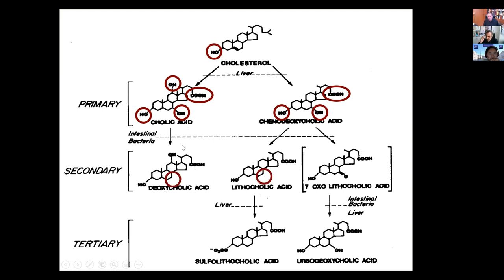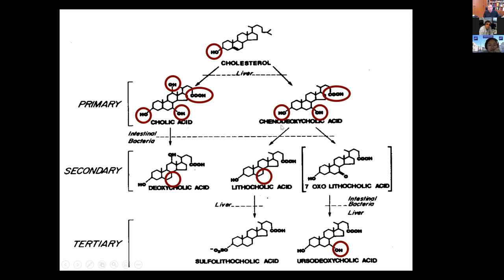When bile is transported into the gut lumen, there is a metabolic pathway provided by intestinal bacteria which dehydroxylate these primary bile acids into secondary bile acids called deoxycholic and lithocholic acids, which are much more toxic than the primary ones. We then have so-called tertiary bile acids, such as ursodeoxycholic acid, which is almost identical to chenodeoxycholic acid — the only difference is that it is the beta epimer, but this stereochemical change makes a big difference in biological properties.